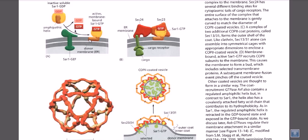After SAR1-GTP embeds itself in that conformation, it has an affinity to attract different protein molecules. SEC23 and SEC24 are some of those molecules. The dimer of SEC23 and SEC24 comes together near the SAR1-GTP. SEC23 has a binding site for the SAR1-GTP molecule and binds with it. SEC24, on the other hand, has a binding site not for SAR1-GTP but for the cargo receptor.